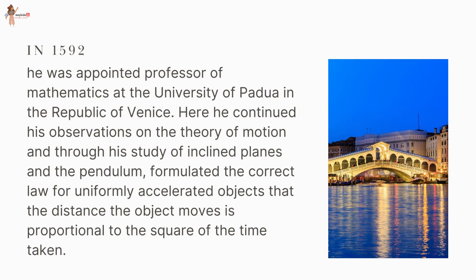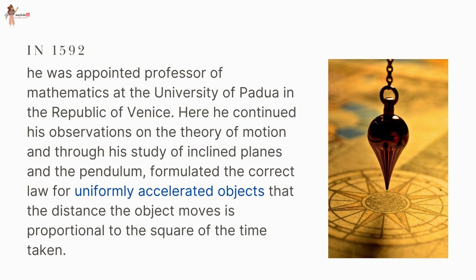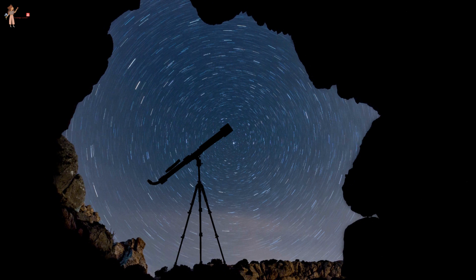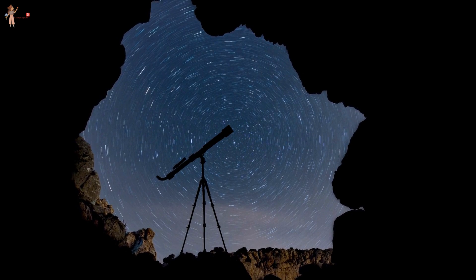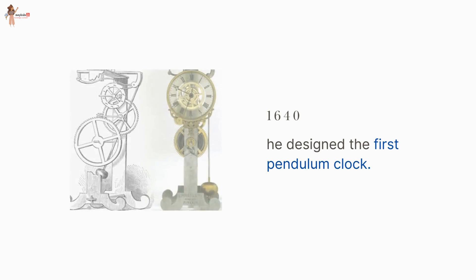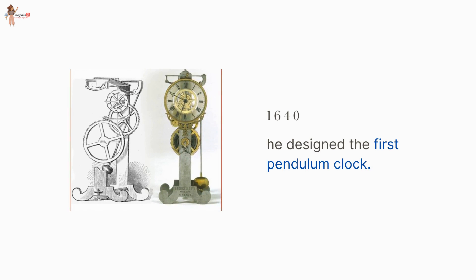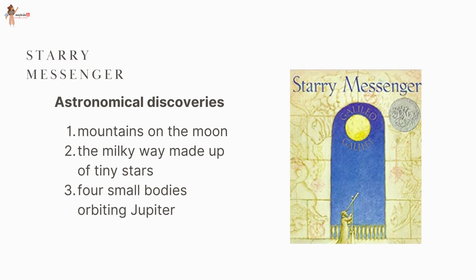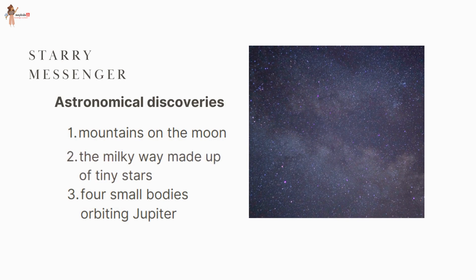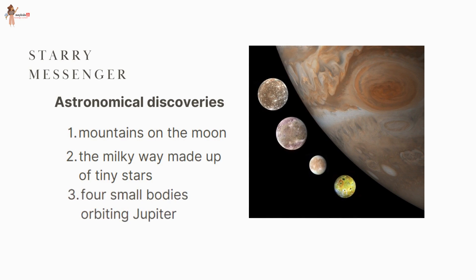In 1592, Galileo was appointed professor of mathematics at the University of Padua in the Republic of Venice. Here he continued his observations on the theory of motion and through his study of inclined planes and the pendulum, he formulated the correct law for uniformly accelerated objects — that the distance an object moves is proportional to the square of the time taken. Galileo was also a remarkable craftsman who developed telescopes with much better optical performance. Around 1640 he designed the first pendulum clock. In his book 'Starry Messenger', he claimed to have seen mountains on the Moon, the Milky Way made up of tiny stars, and four small bodies orbiting Jupiter.